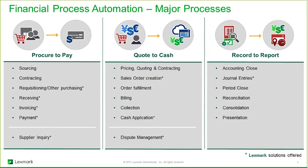FPA or financial process automation really has two meanings. One is the general term financial process automation, which refers to the major processes that cover the financial process scope. It also refers to our division, the financial process automation team. In terms of scope, the first major process is procure to pay, and this is where requisitioning fits. This includes accounts payable and requisitioning.